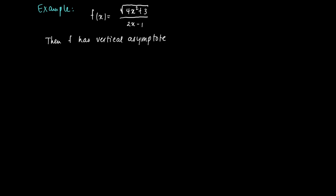For x = 1/2, the numerator will not vanish but the denominator will vanish. This provides enough arguments to state that f has a vertical asymptote at x = 1/2.